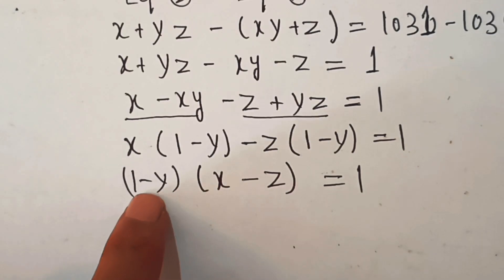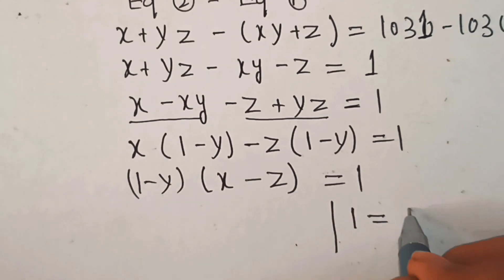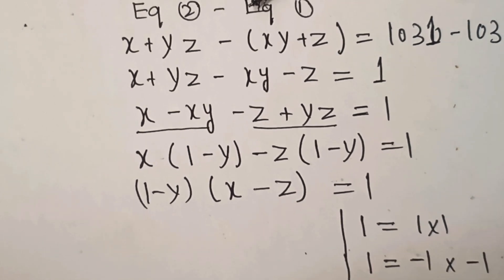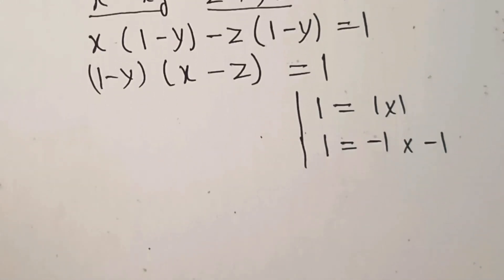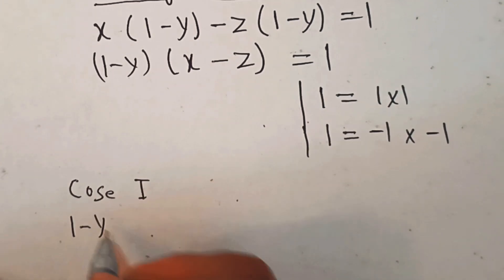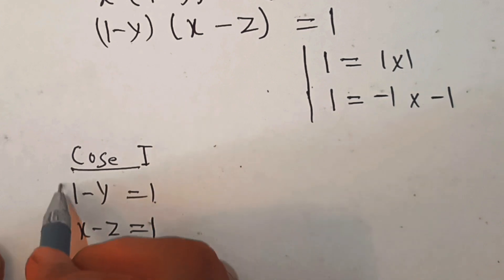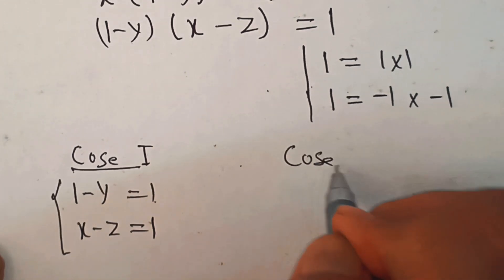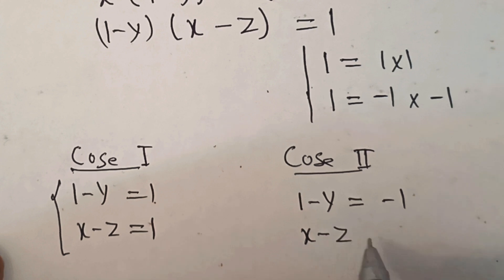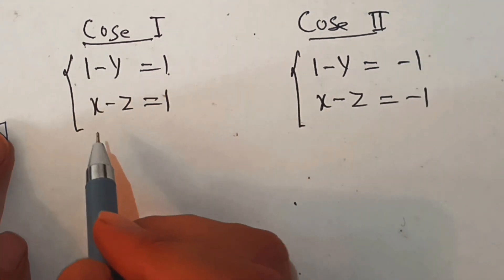So here, the product of two factors is equal to 1. The factors of 1 are of two types: 1 equals 1 times 1, and 1 equals minus 1 times minus 1. That means we have two cases. Case one: (1 minus y) equals 1 and (x minus z) equals 1. Case two: (1 minus y) equals minus 1 and (x minus z) equals minus 1.